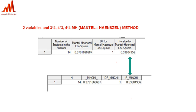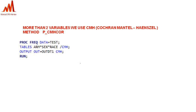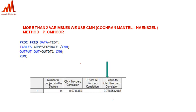Up to now we have been talking about two variables. If more than two variables — like three or four variables — are involved, we use the CMH method, which stands for Cochran-Mantel-Haenszel. With three variables being cross-compared, we specify CMH as the method in the output and tables syntax. The p-value we need to populate in the output is for CMH non-zero correlation.